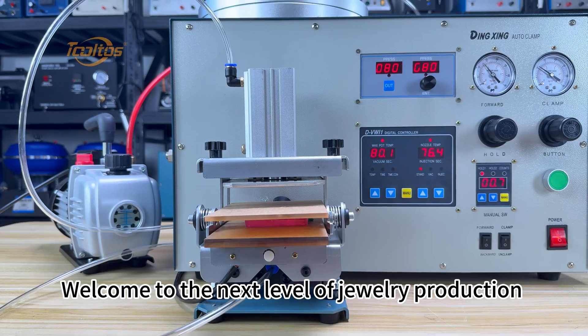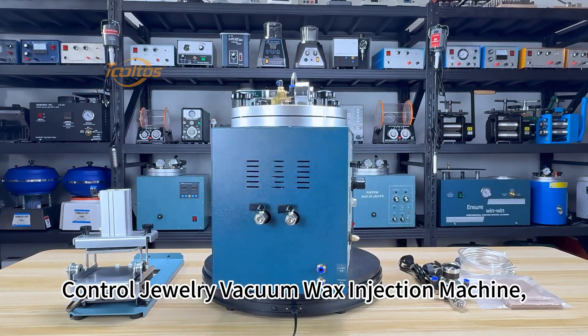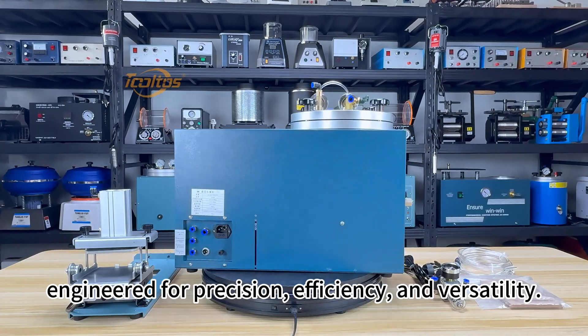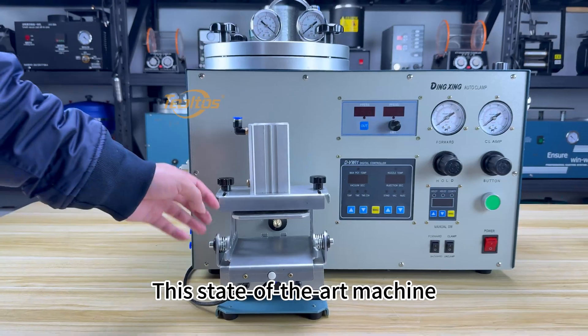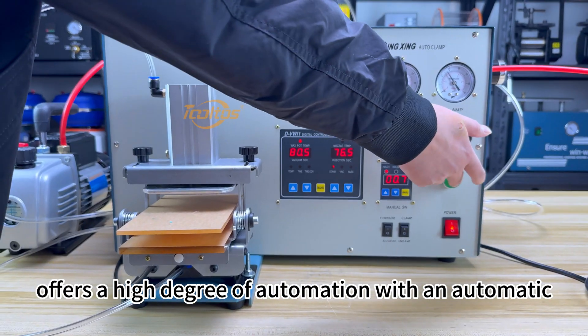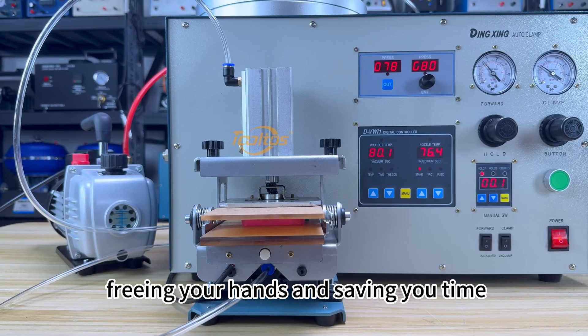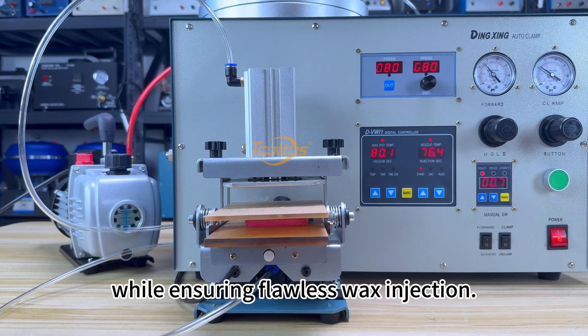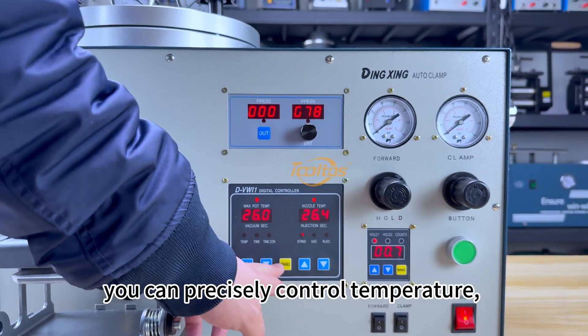Welcome to the next level of jewelry production with the Toltos Automatic Digital Control Jewelry Vacuum Wax Injection Machine, engineered for precision, efficiency, and versatility. This state-of-the-art machine offers a high degree of automation with an automatic clamping device, freeing your hands and saving you time while ensuring flawless wax injection.